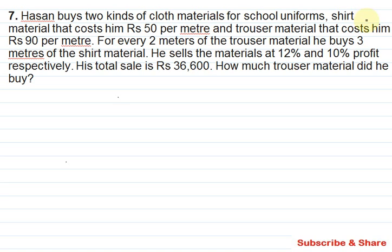Exercise 2.4, Problem Number 7. Haasan buys two kinds of cloth materials for school uniforms: shirt material that costs him rupees 50 per meter, and trouser material that costs him rupees 90 per meter. For every two meters of trouser material, he buys three meters of shirt material. He sells the materials at 12% and 10% profit respectively, and his total sale is 36,600.